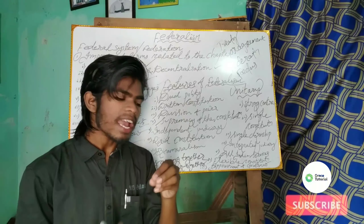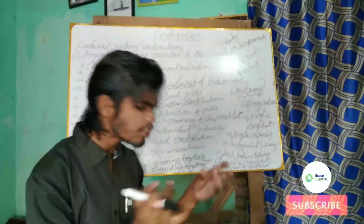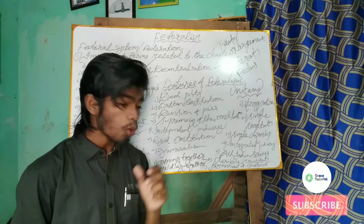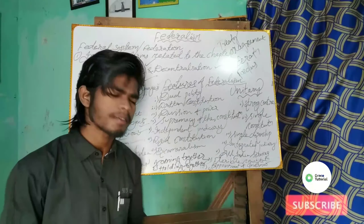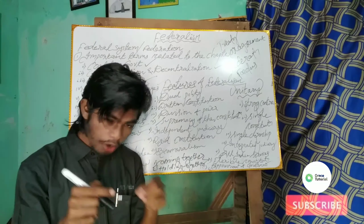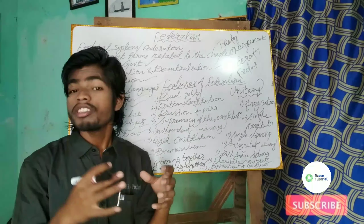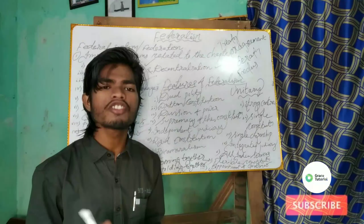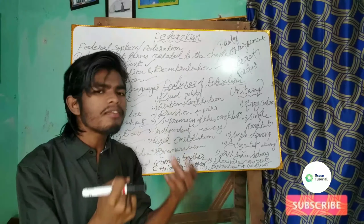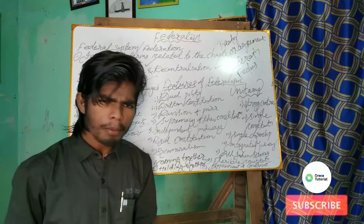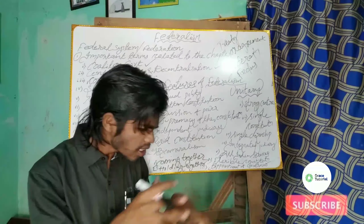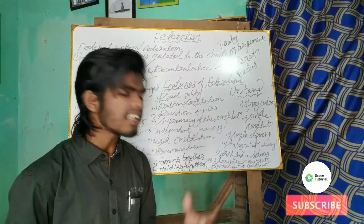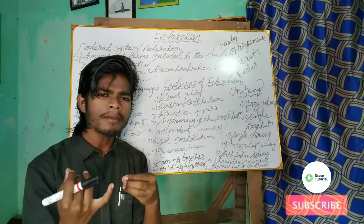Next is written constitution. The constitution is basically of two types — written and unwritten. The Indian constitution is not just a written constitution but the lengthiest written constitution in the world. Originally it had 395 articles divided into 22 parts and 8 schedules, but currently it consists of more than 444 articles divided into 25 parts and 12 schedules, with hundreds of amendments — making the Indian constitution the bulkiest constitution in the world.